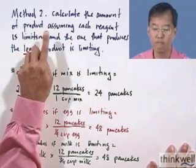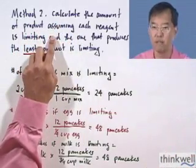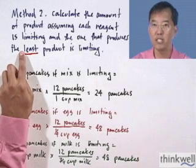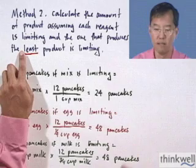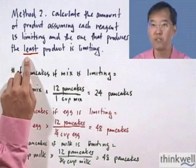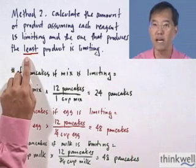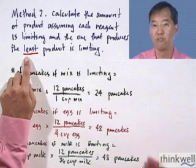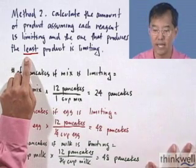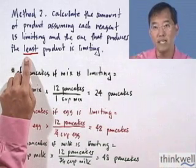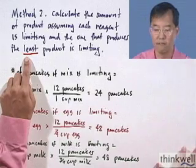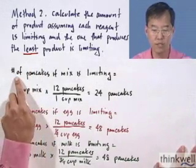We're going to calculate the amount of product that you can make, assuming each one of the reagents — or each one of the ingredients — is the limiting ingredient or limiting reagent. The one that produces the least amount of product is obviously the one we would run out of first, and so that's our limiting reagent. It means you have to do a calculation for every single one of your reagents or ingredients.